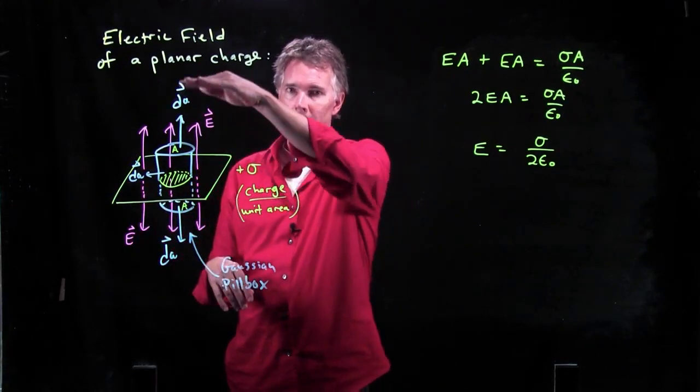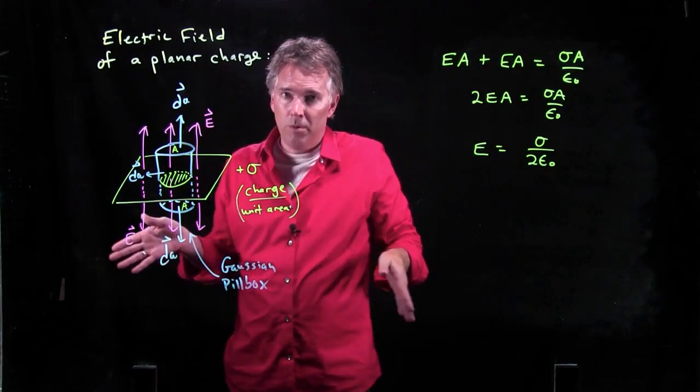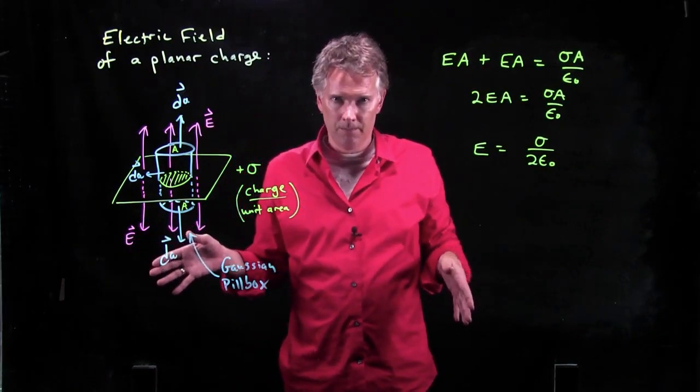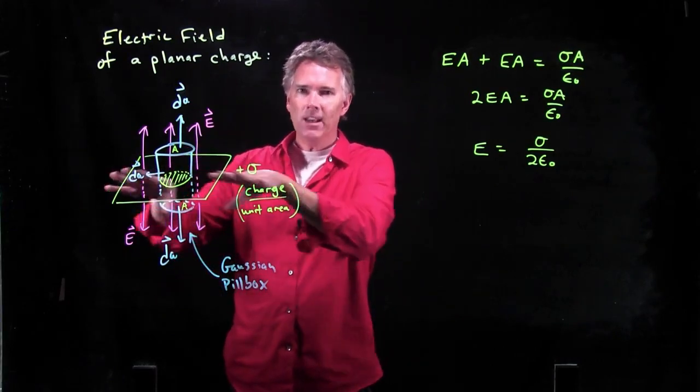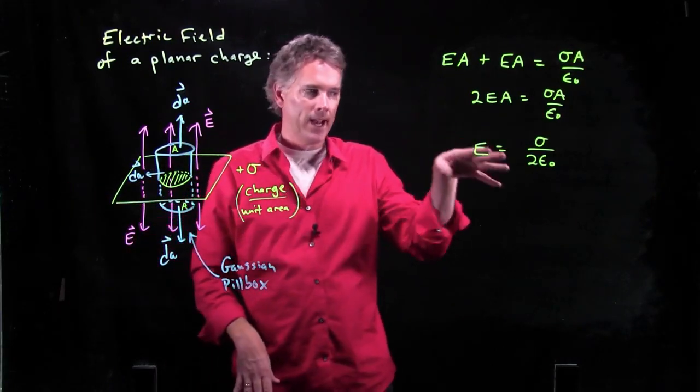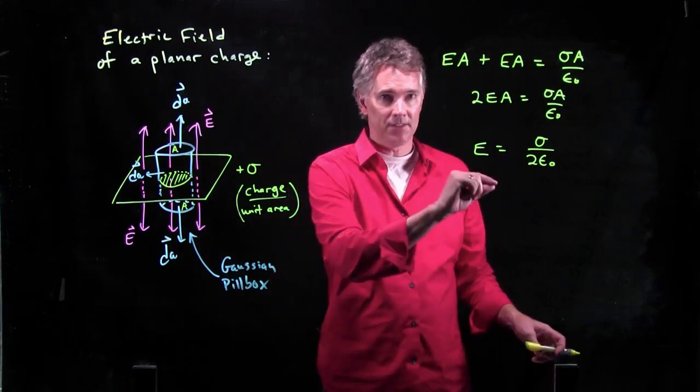And the reason it's a constant is because the plane that we're considering is infinite. So as you go higher up, your field of view opens up and you see more charge beneath you. Okay? So only in the case where it's really an infinite plane of charge will that electric field be a constant above it.